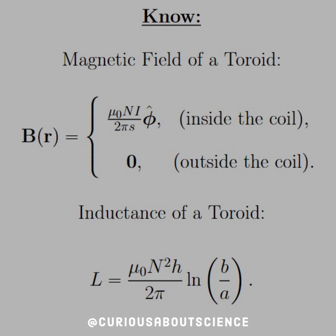The magnetic field of a toroid has a radial dependence: B = μ₀NI / (2πs), where N is the number of turns — thank you Ampere's law — inside the toroid, and 0 outside. Because all this really was, was bending a solenoid in on itself.